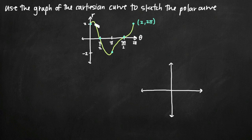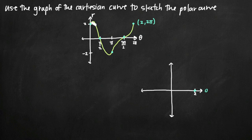This first point tells us that the angle is 0 — remember that angle 0 is along this axis. So at angle 0, we're out a distance of 2 from the origin. At angle 0 on the polar system, we're out a distance of 2, so let's call this point 2. We're out a distance of 2 from the origin, so we're right here.